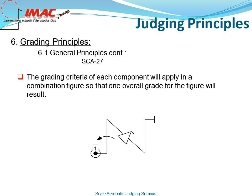Let's take a look at the example below. Imagine the vertical upline — the track was off 10 degrees, and would result in a one-point deduction. On the 45-degree downline, let's say he over-rotated by 15 degrees. That would be another one-and-a-half-point deduction. The final upline track was again off by 10 degrees, resulting in a one-point deduction. The total score for this maneuver would be 6.5. This is the total figure score.